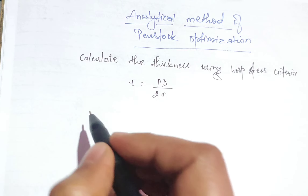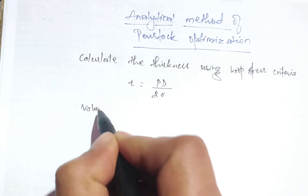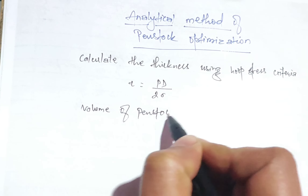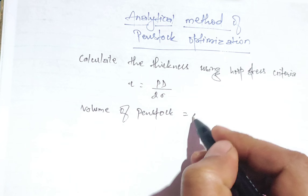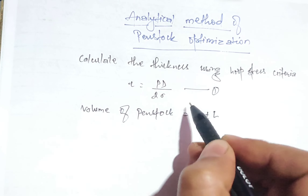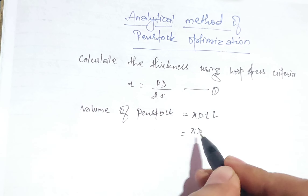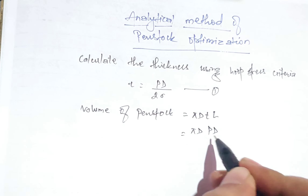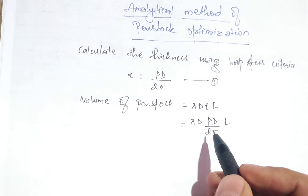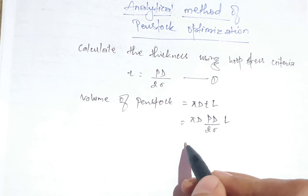After this, we will calculate the volume of the penstock using π·d·t·l. Now we will place the thickness equation into this, giving π·d times p·d divided by twice of sigma, times l. This forms π·d²·p divided by twice of sigma, times l, where d equals the diameter.